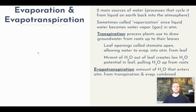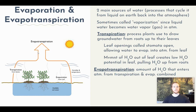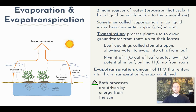Evapotranspiration is a way to add up the total amount of water leaving an ecosystem by both transpiration and evaporation. Water that evaporates from the soil or bodies of water, combined with water that leaves plant stomata via transpiration, is considered evapotranspiration. Both processes are driven by the sun — the sun's rays warm the soil and the leaf, causing liquid water to evaporate as a gas into the atmosphere.